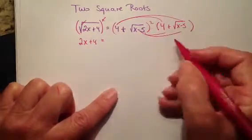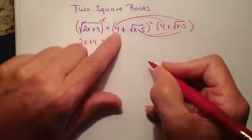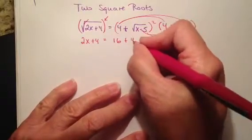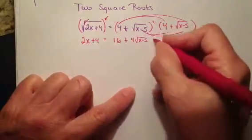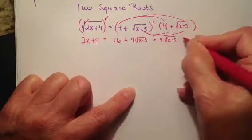So when I FOIL this out, my first two terms are going to give me 16. 4 times the square root of x minus 5, I really can't do anything with that. So it's just going to be 4 times the square root of x minus 5. My middle two terms, I'm going to get the same thing. So plus another 4 square root of x minus 5.